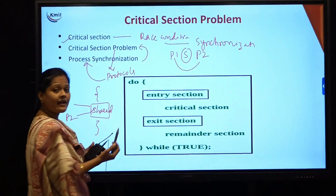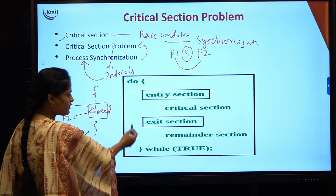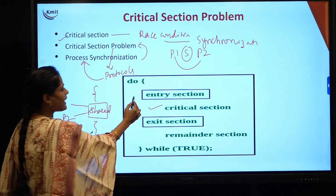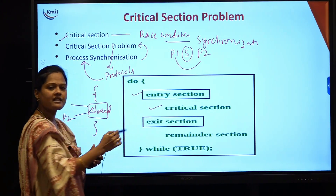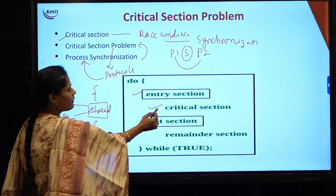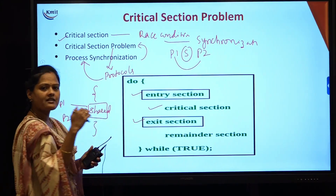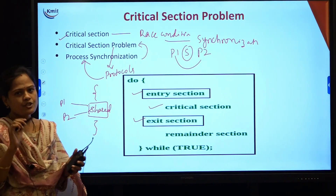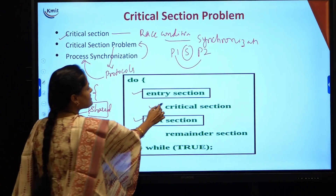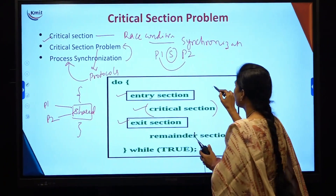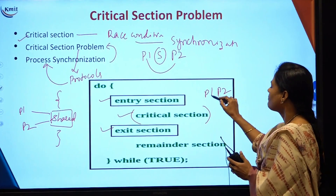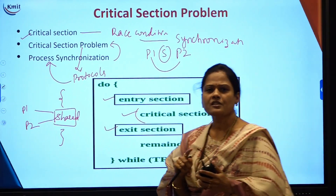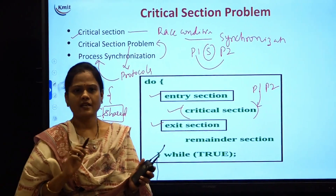We have n number of methods, but here concentrate on this structure. The part where data is to be shared is the critical section. We employ an entry section — before entering the critical section we make a test. We enter into the critical section, then come out through the exit section, and the remaining code is the remainder section. We make sure that only one process is present in the critical section at a particular time, so that only one process uses the shared variable at a time, and you will not get the race condition.